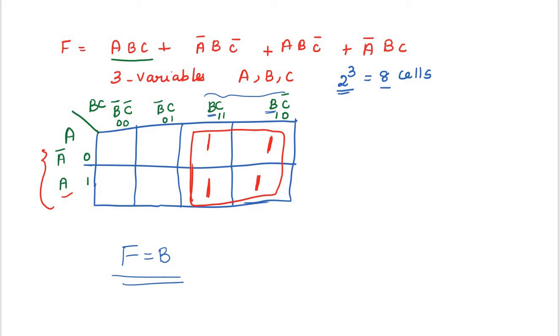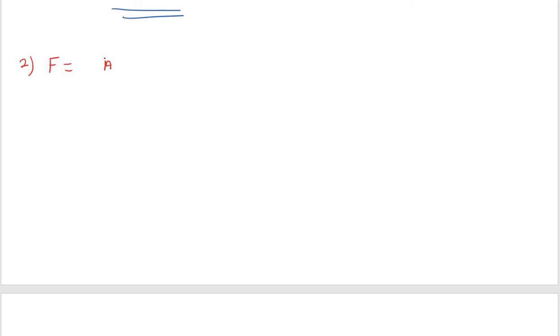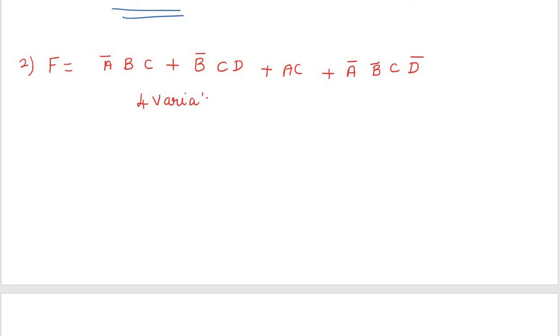Next, problem number 2. F is equal to A'BC + B'CD + AC + A'B'CD'. I am going to explain how to minimize this expression using Boolean laws. There are four variables in this expression: A, B, C, D.